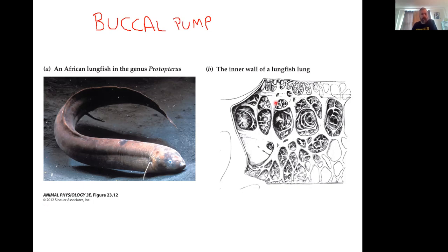Now, inside this lung, again, remember, we want to have as much surface area as we possibly can. So we're going to subdivide the inside of this little outpocketing, this little pouch, right, with as many of these little trabeculae as we possibly can.